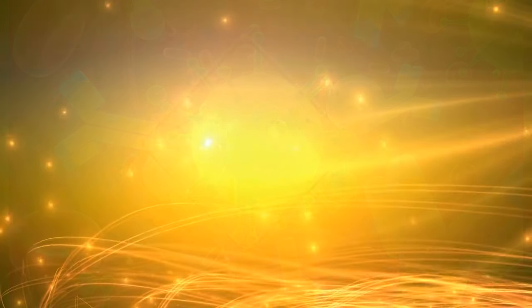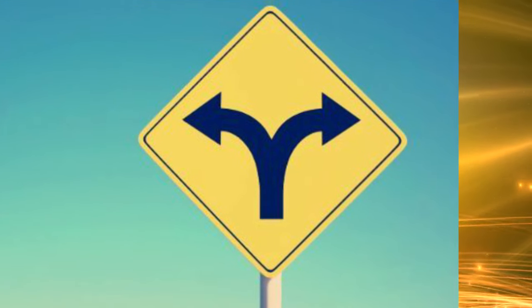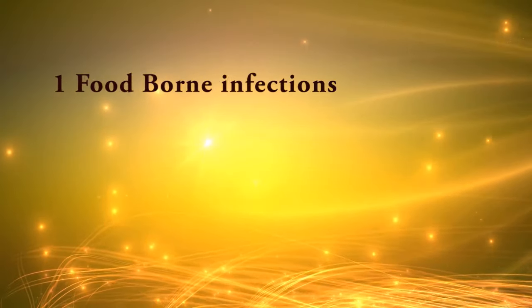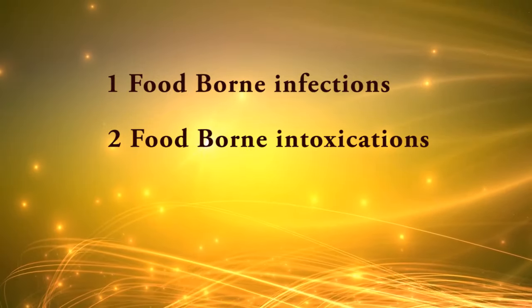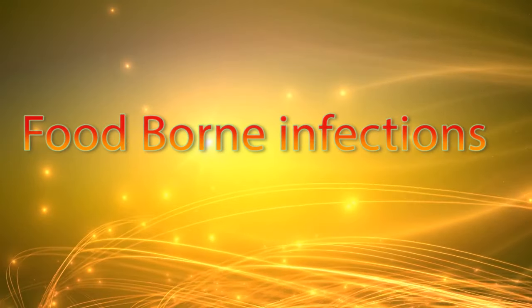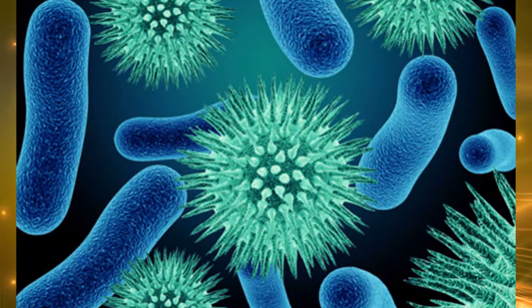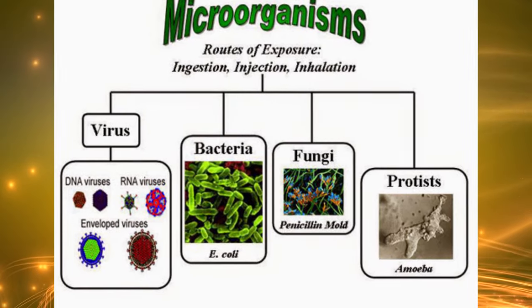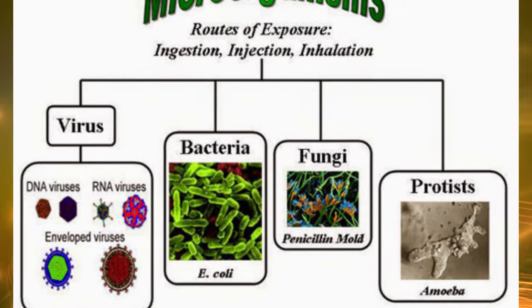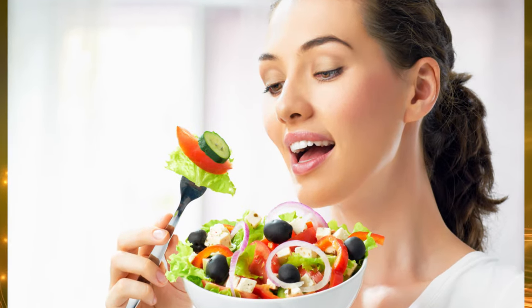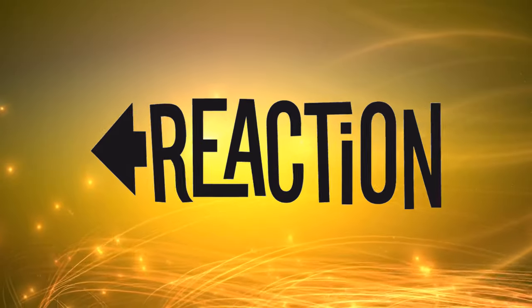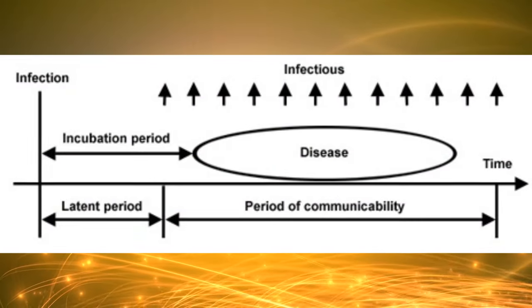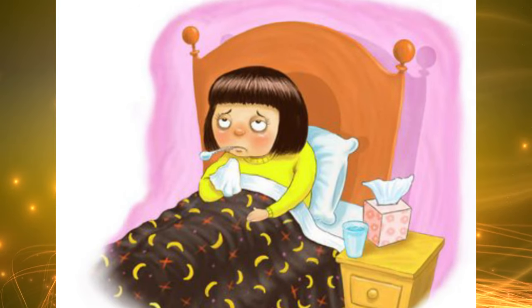Gastrointestinal symptoms such as nausea, vomiting, diarrhea, abdominal pain, and abdominal cramps are most common. However, such diseases can also have neurological, gynecological, immunological, and other symptoms. Foodborne diseases can be classified into two types: foodborne infections and foodborne intoxication. Foodborne infections are caused by the entrance of pathogenic microorganisms such as bacteria, fungi, viruses, or parasites contaminating food into the body, and the reaction of body tissues to their presence. Foodborne infections have long incubation periods and are usually characterized by fever.